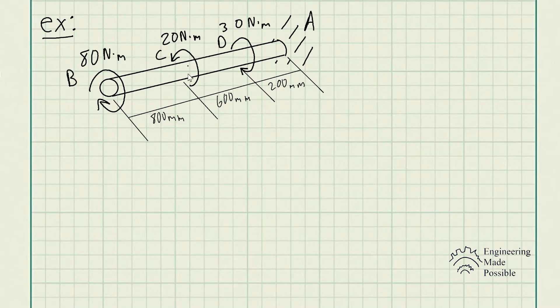So here is the steel shaft. As you can see, all the torques being applied: 80 Nm, 20 Nm, 30 Nm at these locations B, C, D. This pipe is fixed at A. You can see the relative locations: 800 mm, 600, and 200 mm where the torques are being applied.